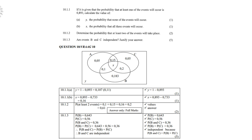10.12: determine the probability that at least two of the events will take place. You must go to where two of the events coincide. Between A and B it's 0.1; between A and C it's 0.15; between B and C it's 0.2. Add up all those values: 0.1 plus 0.15 plus 0.16 plus 0.2. The answer is 0.61. Note that X represents three events, so it is included.